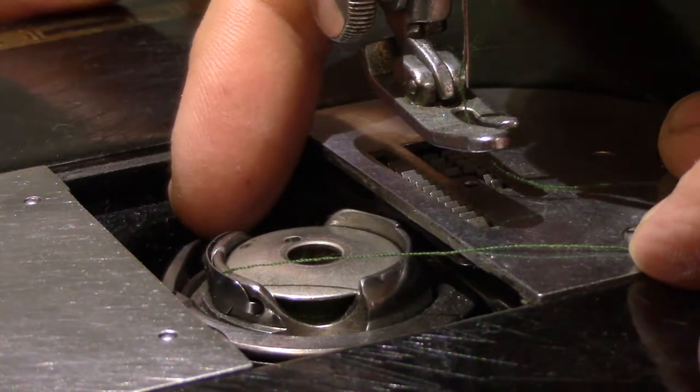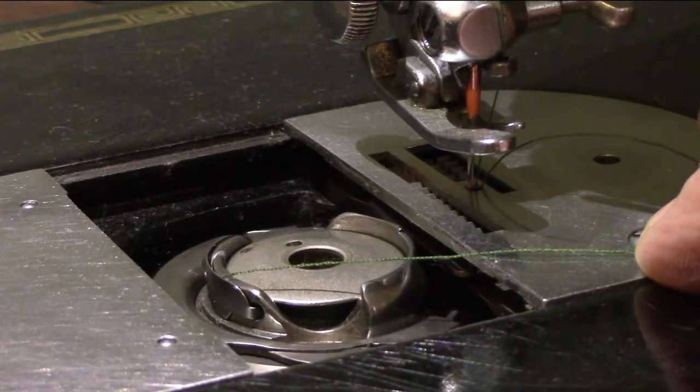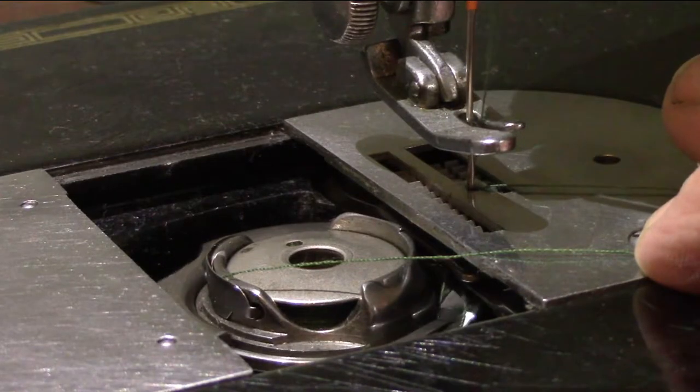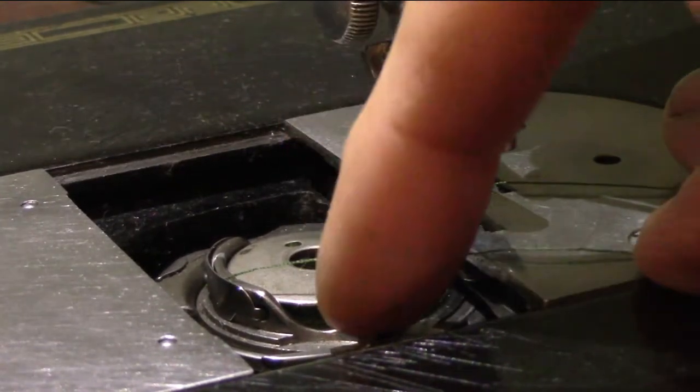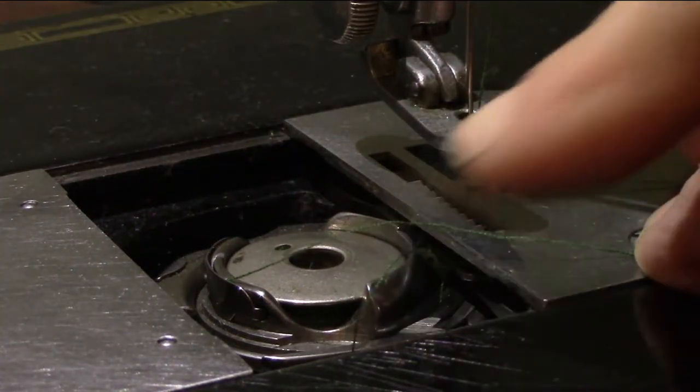You see this hook? It comes around, passes around the needle, hooking the needle thread, and you can see how the hook here has taken that thread and it brings it all the way around in a circle.